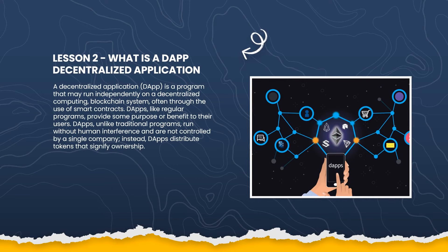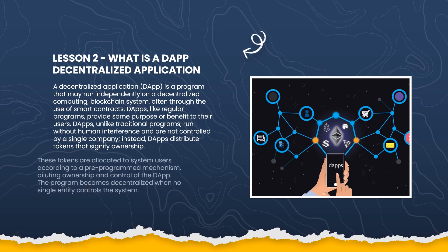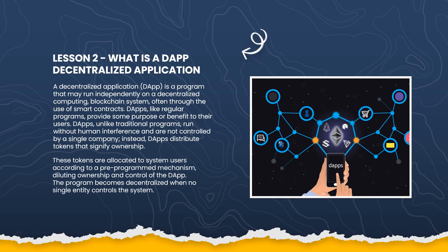A decentralized application (D-App) is a program that may run independently on a decentralized computing blockchain system, often through the use of smart contracts. D-Apps, like regular programs, provide some purpose or benefit to their users. Unlike traditional programs, D-Apps run without human interference and are not controlled by a single company. Instead, D-Apps distribute tokens that signify ownership, allocated to system users according to a pre-programmed mechanism, diluting ownership and control of the D-App. The program becomes decentralized when no single entity controls the system.